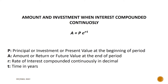When we want to calculate amount or future value, the formula is A equals P multiplied by E raised to the power RT, where P stands for principal or investment or present value, R stands for rate of interest compounded continuously in decimal, and T stands for time in years. With the same formula we can calculate present value, where P equals A divided by E raised to the power RT, or equivalently P equals A multiplied by E raised to the power minus RT.